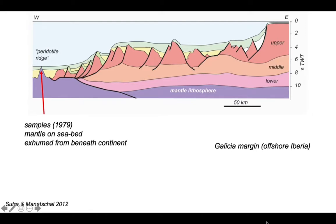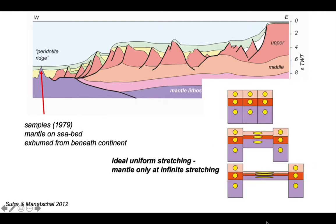This cross-section actually encounters some rocks on the seabed over on the western side, labeled the Peridotite Ridge. This area was sampled by deep-sea science campaigns in the late 1970s and recognized that there was mantle on the seabed, and that mantle had been exhumed from beneath continental crust. Now we could try and explain that by uniform stretching, but you can see that as we stretch our ideal cartoon of different crustal levels—let's imagine the mantle is that purple material—only at infinite stretching is mantle ever exposed. But even at very high stretch factors, there's still a veneer of crust on top.